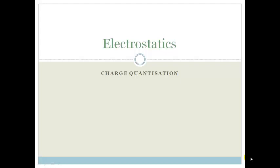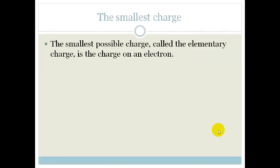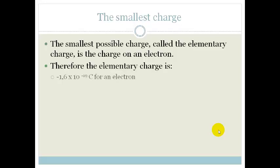G'day Great Tens. In this lesson we're learning about charge quantization. The smallest possible charge, called the elementary charge, is the charge on an electron. Therefore, the elementary charge is minus 1.6 times 10 to the minus 19 coulombs for an electron.